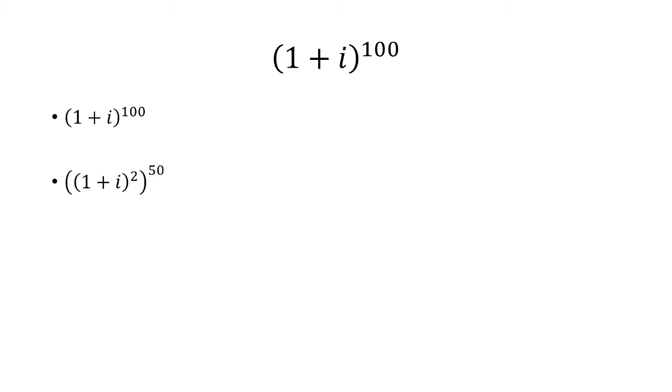Now I have to expand (1 + i) squared, which is 1 + 2i + i^2. i squared is -1, so when I add that with 1, it cancels. And so I'm left with (2i)^50.